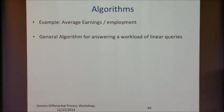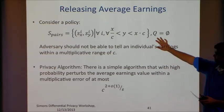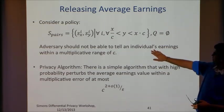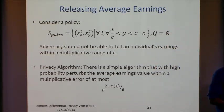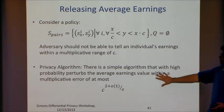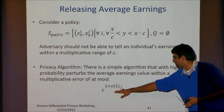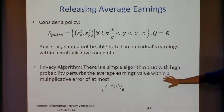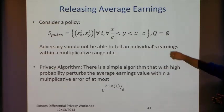For example, consider the employment of a business. You can define a policy that an adversary should not be able to tell an individual's earnings or a business's employment within a multiplicative range of C. It turns out there's a simple algorithm — basically adding noise to the log of this value — that gives you a multiplicative error of at most C^2 / epsilon. Your error is not in terms of the entire domain size, but just the multiplicative factor specified in your policy.